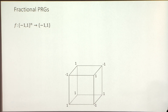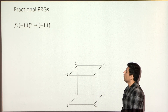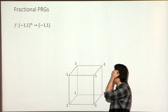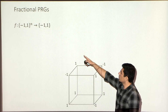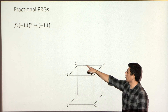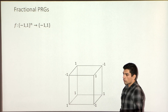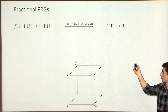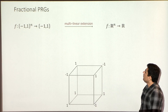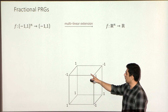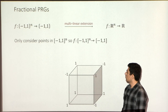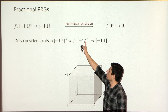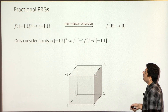To explain the approach, I need to introduce an intermediate object — a more relaxed version of a pseudorandom generator, which we call a fractional pseudorandom generator. The pseudorandom generator was defined on the Boolean cube {-1,1}^n. Any function on the vertices can be multilinearly extended over all of R^n, giving a unique multilinear polynomial. We look only at values inside the cube [-1,1]^n. Since the vertices take values ±1, the multilinear extension also takes values in [-1,1] inside the cube.